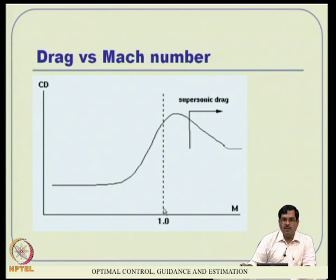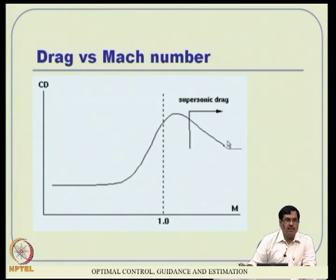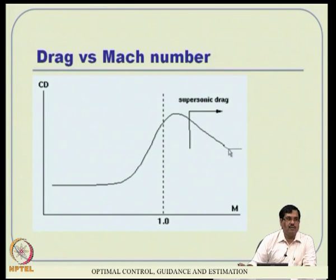C_D variation with Mach number: in the subsonic region it is a fairly constant value for the C_D0 portion. Then it starts building up very fast in the transonic region, decreases again, and stabilizes at high supersonic speeds around Mach 1.5 and beyond. The stabilized supersonic value is higher than the subsonic value - meaning if you fly at supersonic speed, drag is much higher than in subsonic flight. That is why commercial aircraft are very successful in the subsonic region. At supersonic speeds, efficiency drops - that is why the Concorde was very expensive to fly and very unsuccessful commercially.